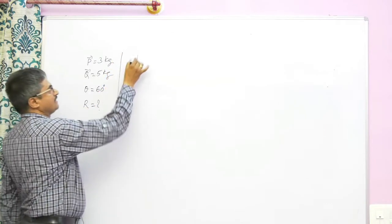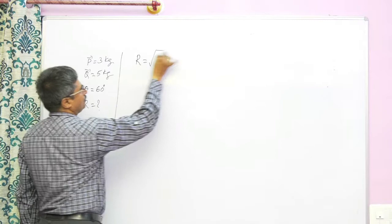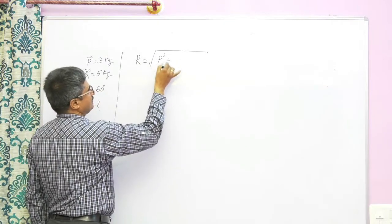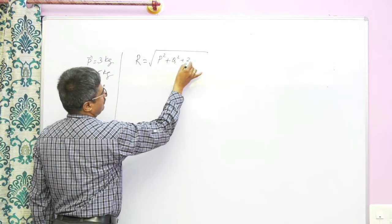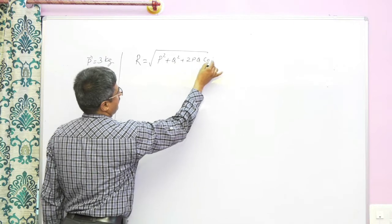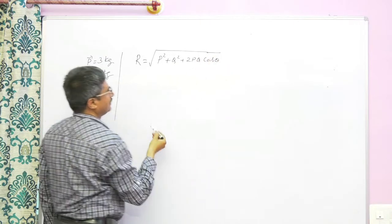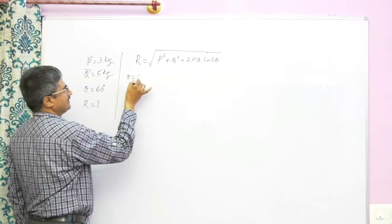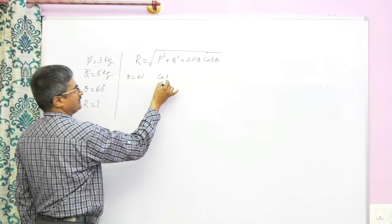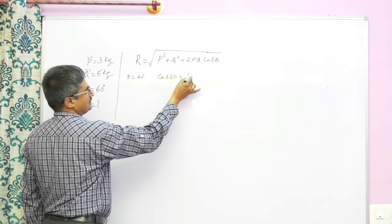The formula is r equals square root of p square plus q square plus 2pq cos theta. Theta equals 60 degrees. We know that cos 60 is half.